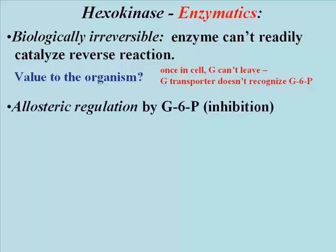Hexokinase is one of the allosterically regulated enzymes of the glycolytic pathway. Glucose 6-phosphate, the product of the catalyzed reaction itself, can bind to an allosteric site on the enzyme and block its catalytic action — in fact, blocking its own formation. Glucose 6-phosphate binding at this allosteric site causes the enzyme to change shape and be unable to bind glucose or ATP at its active site.